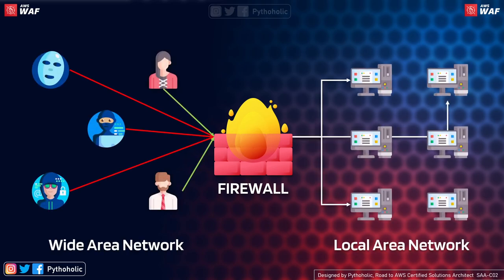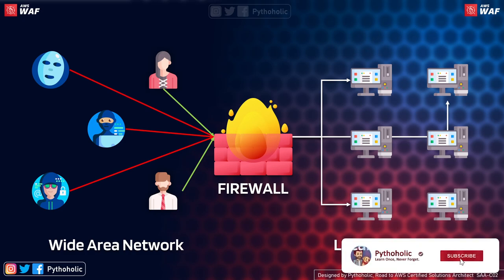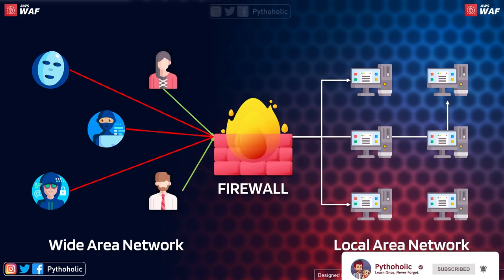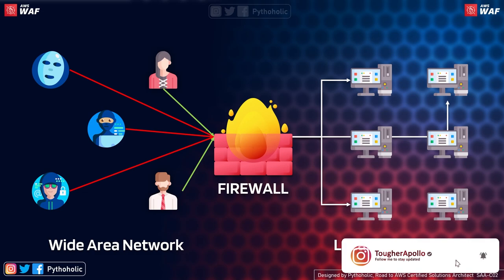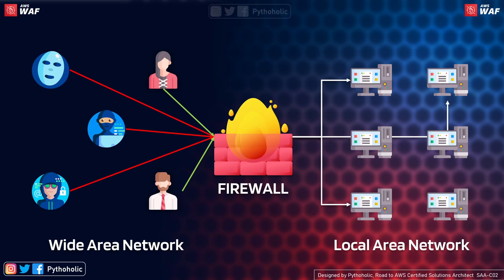Coming back to the networking world, you have two things: your local area network where your devices or servers host applications, and the wide area network or internet from which requests are sent across the globe. Security to your network is imperative, and you can secure it by restricting access to people you trust. A firewall can help you do that. A firewall could be software installed on your machine or hardware that sits between your network and the internet, which carefully analyzes traffic and allows or restricts flow using predefined configuration rules.